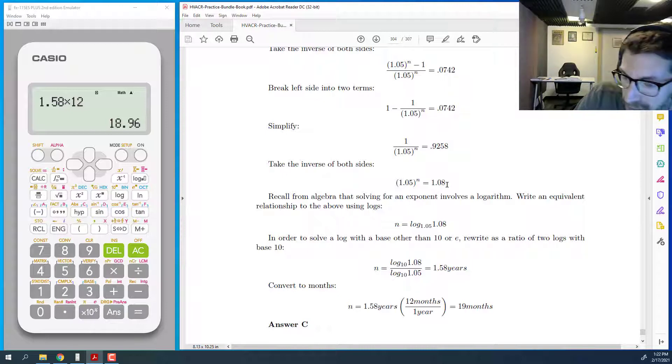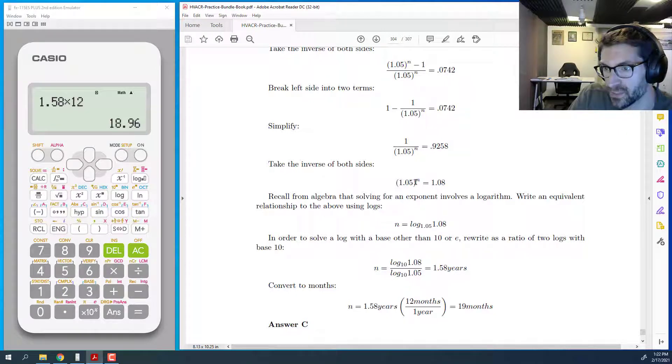Well, if you recall, the value that's being raised to an exponent is called the base. And the exponent is what that base is being raised to. So another way to write this expression is to say n is some number that 1.05 gets raised to, and the result is 1.08. In other words, a log is an exponent.